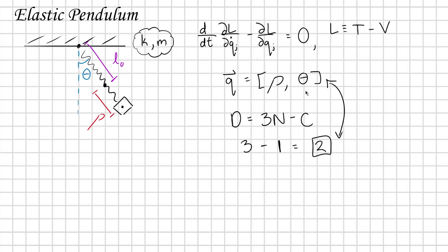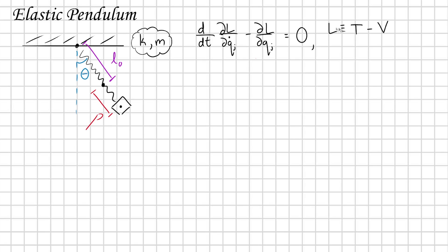With any problem in Lagrangian mechanics, we need to write out our Lagrangian function in terms of these coordinates. Specifically, to define our Lagrangian we're going to need to write out the kinetic energy function and the potential energy function in terms of our coordinates. So first, let's define our kinetic energy function for this system.